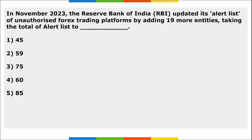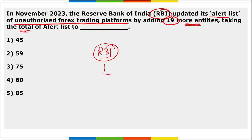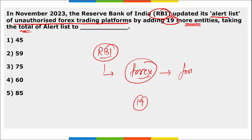Next: RBI updated their alert list of unauthorized Forex trading platforms by adding 19 more entities. Forex trading is the buying and selling of foreign currencies. A total of 19 entities were recently added to the alert list, bringing the total number of unauthorized players in this list to 75.